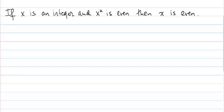The theorem that we're going to prove is that if x is an integer and x² is even, then x is even. And we're going to prove this by contrapositive.